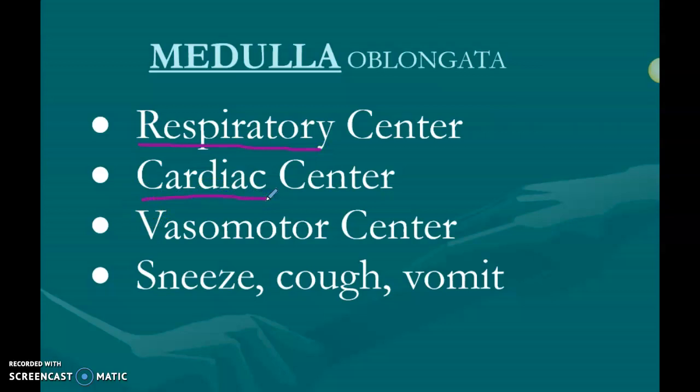The medulla oblongata also does other cool things, like housing your vomit center. There's a thing called the blood-brain barrier where astrocytes — one of your neuroglia cells — wrap around capillaries to prevent things from leaving the blood into the brain and causing problems. However, in the medulla oblongata there is actually free access to the blood without the blood-brain barrier, so it can detect problems in the blood. That's why your vomit center is tied to the medulla oblongata.